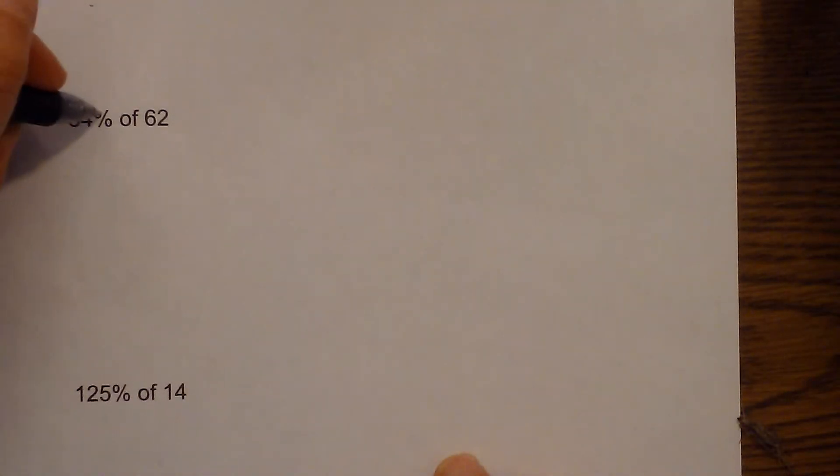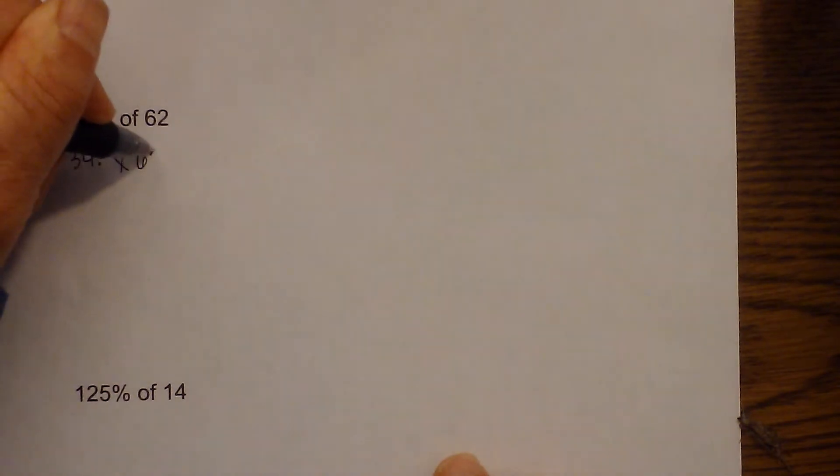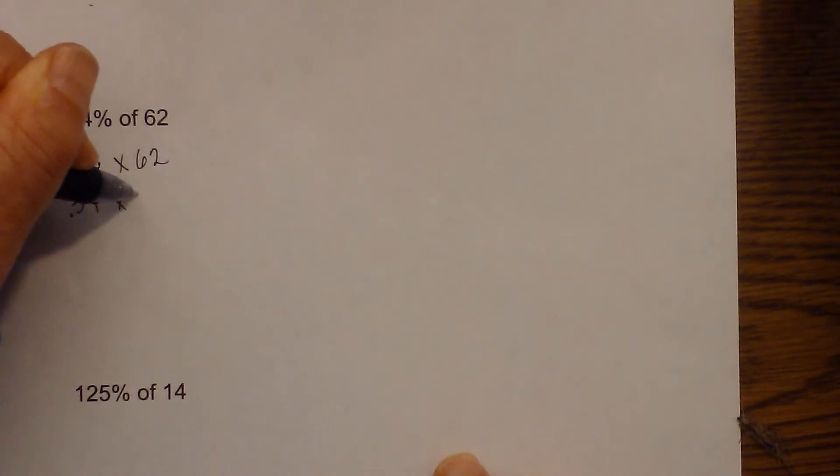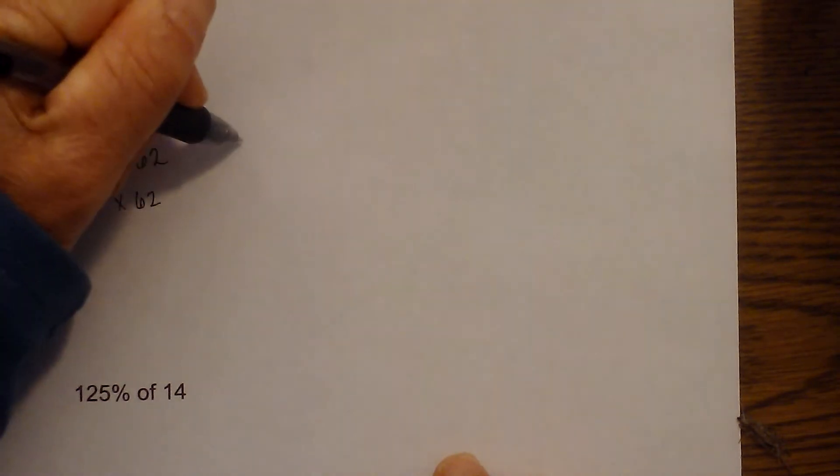We are going to replace the percent with a decimal. The of with a multiplication. Then we are going to move. So we are going to move the decimal 2 to the left. So that becomes .34 times 62. Then we are going to solve.